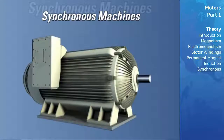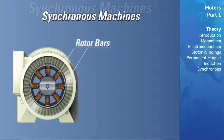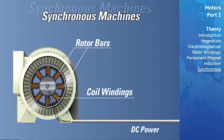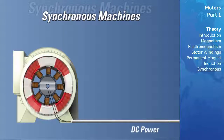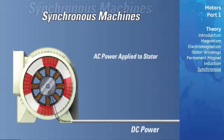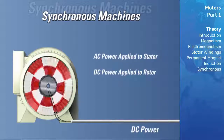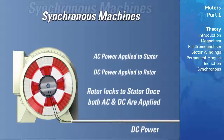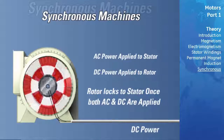Larger motors tend to be synchronous machines. The rotor of the synchronous motor is constructed similar to that of the squirrel cage rotor; in addition to rotor bars, coil windings are added. These coil windings are connected to an external DC power source through a slip ring and brush assembly. During a start, AC is applied to the stator and the motor accelerates as an induction motor would. Once it reaches maximum speed, DC is applied to the rotor coils, producing a strong, constant magnetic field in the rotor. This field locks in step with the rotating stator field, so there is no difference in speed between the rotor and the stator's rotating field.